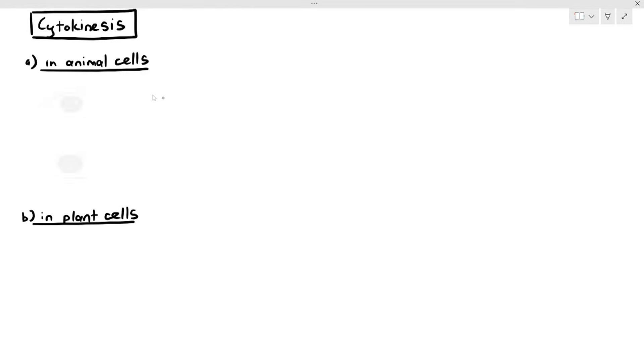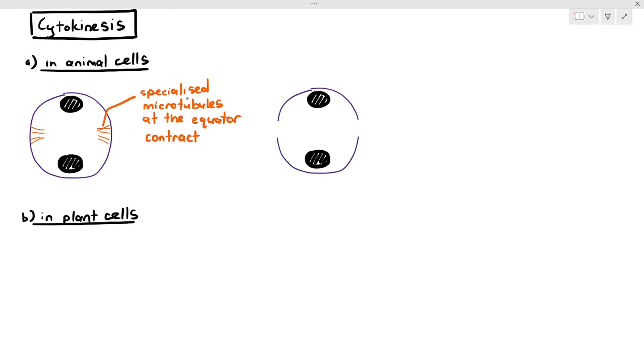For cell division or cytokinesis in animal cells, there are specialized microtubules that will start to form at the equator. At the equator, as you can see that orange color line, they will start to contract. When they contract, they will pull in the cell surface membrane. What's happening to the cell surface membrane is it's going inwards, folding inwards.